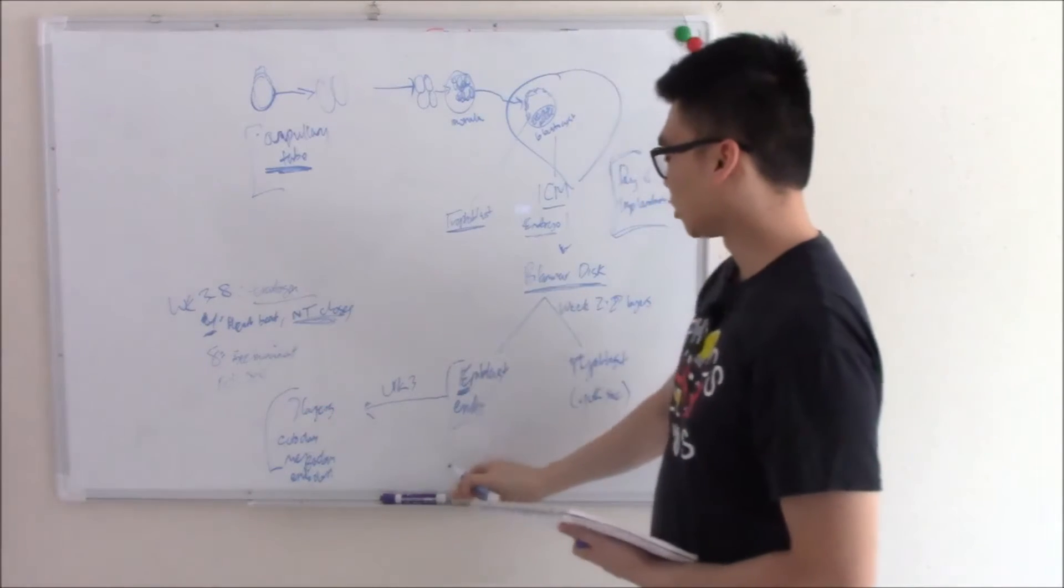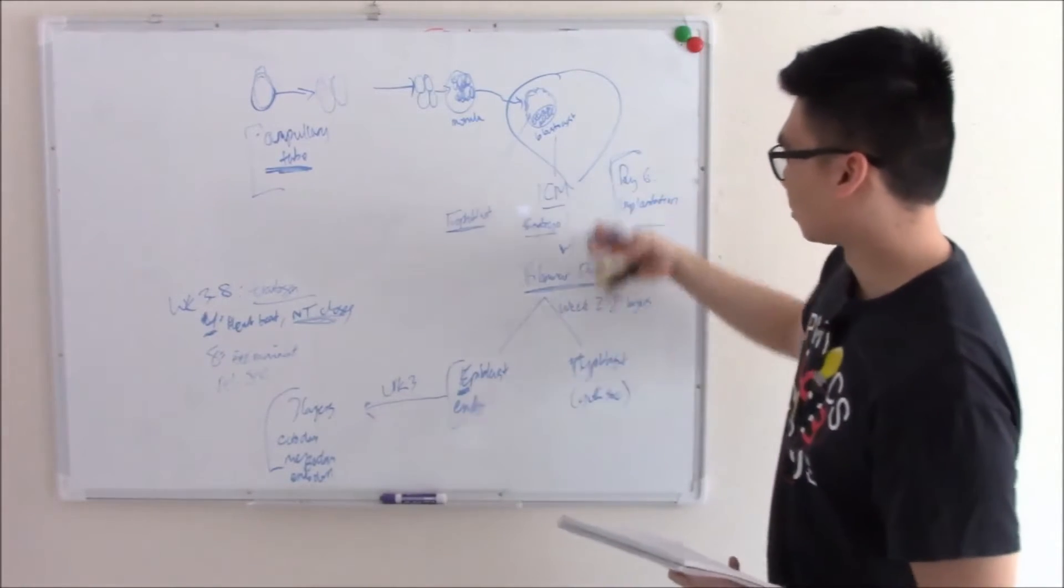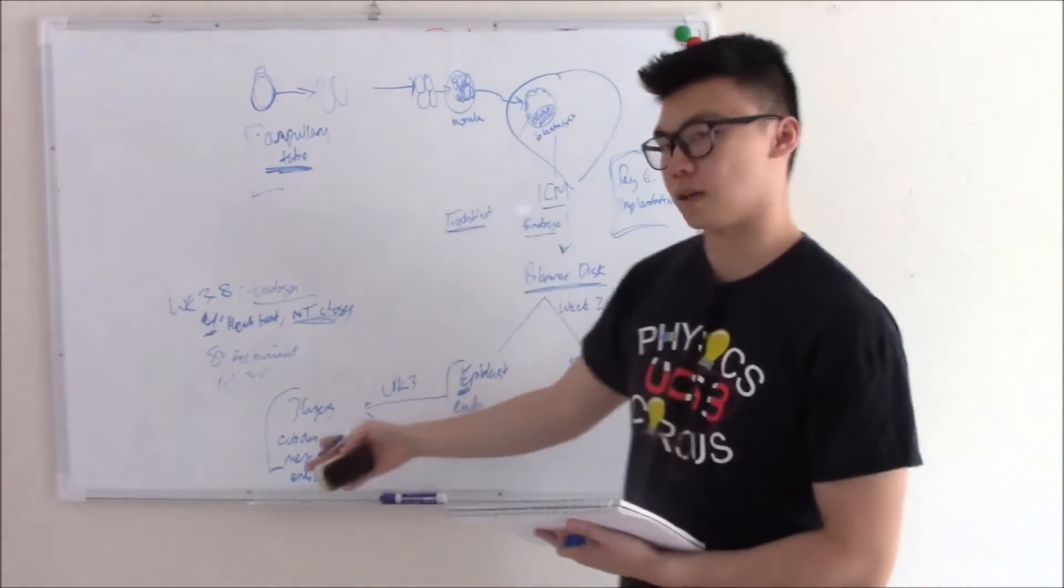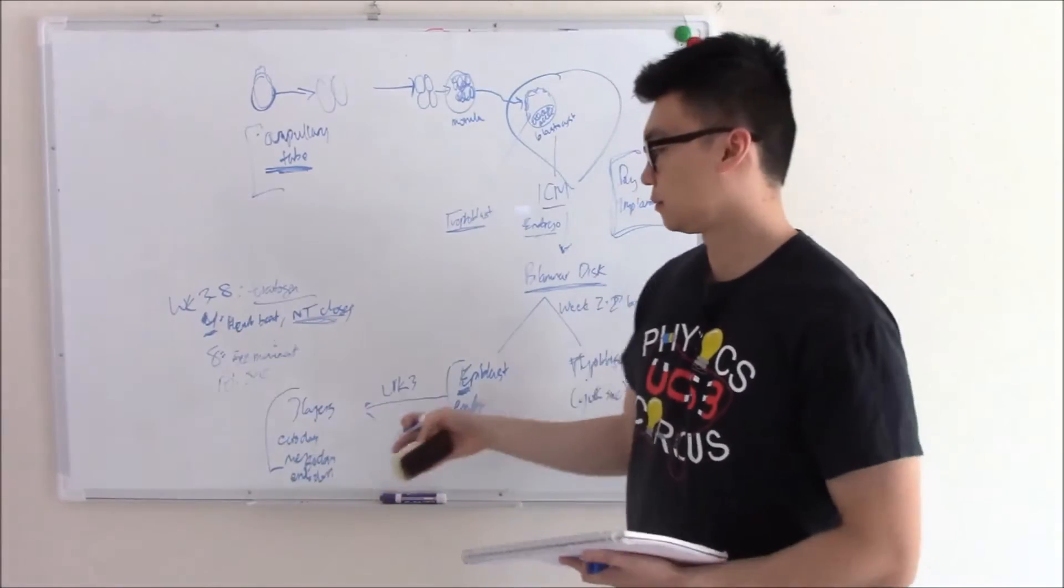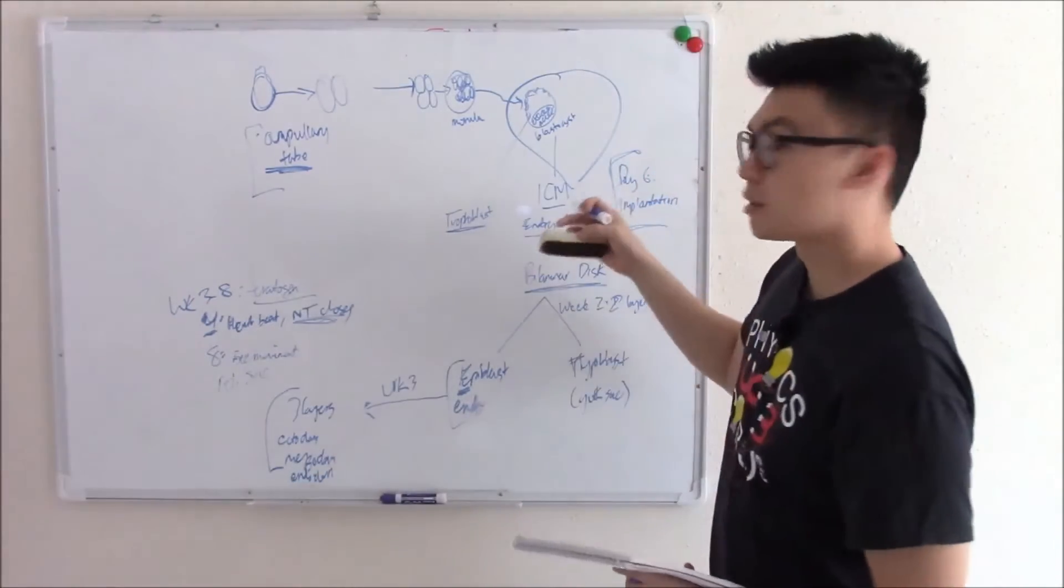That is what happens to your intercellular mass. It becomes a bilaminar disc, which eventually becomes three layers - your endoderm, ectoderm, mesoderm - and becomes your embryo. That's your intercellular mass.